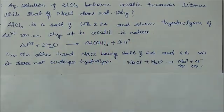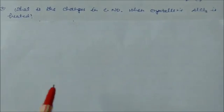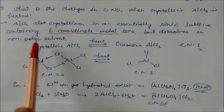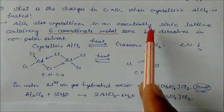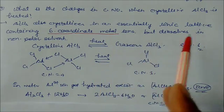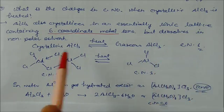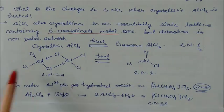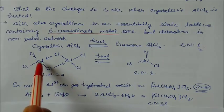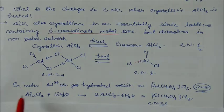Change in coordination number when crystalline AlCl3 is heated. AlCl3 crystallizes in an essentially ionic lattice which contains six coordinate metal ions, but it also dissolves in non-polar solvents. Crystalline AlCl3 on heating becomes gaseous AlCl3, and coordination number changes from 6 to 4. You can see here, AlCl3 has 6 Cl atoms attached. On heating, it becomes coordination number 4. In gaseous state, one Cl is attached with four chlorines.